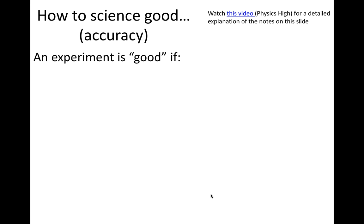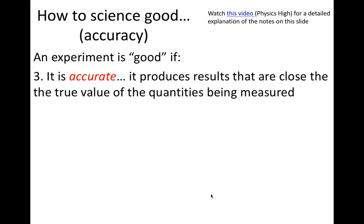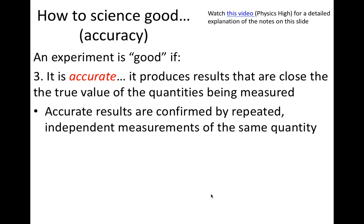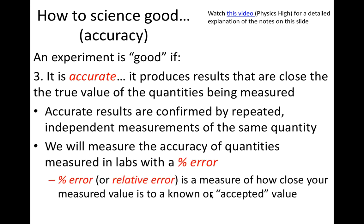The third aspect of a quality experiment is accuracy. We can describe the accuracy of an experiment if it yields results that are close to the true value of what we are measuring. We can be more confident in the accuracy of our results if we perform repeated independent measurements of the same thing. Many of our experiments this year will measure gravitational acceleration — the rate at which a falling object accelerates downward — with an expected value of 9.8 meters per second squared. The final step in most labs will be to calculate a percent or relative error, which measures how close your measured value is to the known or expected value.